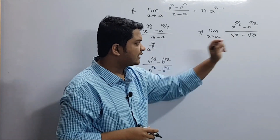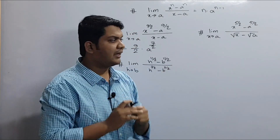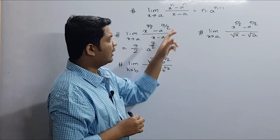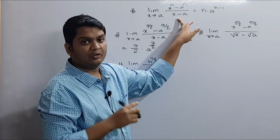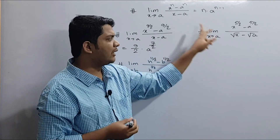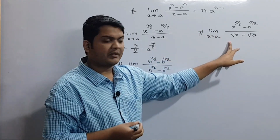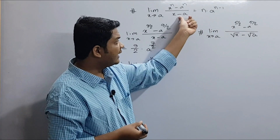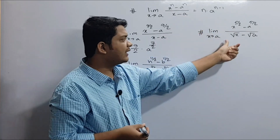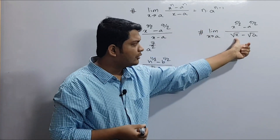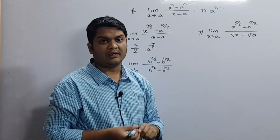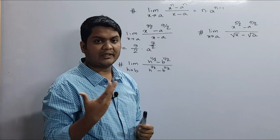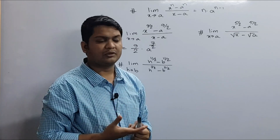9 by 2 is 9 by 2. Then the answer involves root x minus root x. We must collect 10 by 2. But the answer is x minus a, which gives root x minus root a.